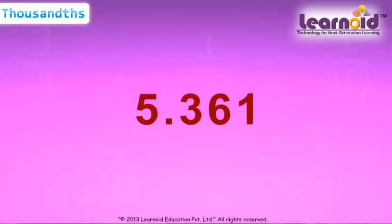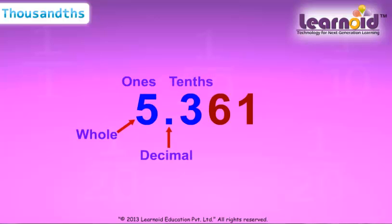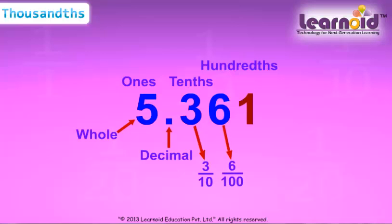Let's take the example of 5.361. 5 is at the ones place, meaning 5 complete things. 3 is at the tenths place, meaning 3 out of 10. 6 is at the hundredths place, meaning 6 out of 100.